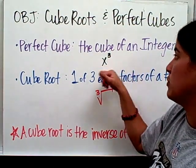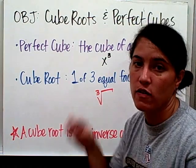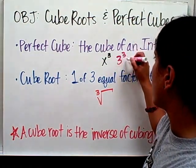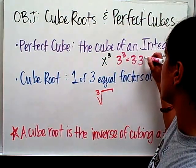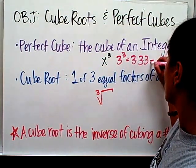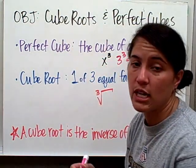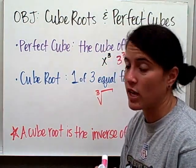So for example, x to the third power. If you're going to cube an integer, that means the third power. So 3 to the third power is 3 times 3 times 3, which is 27. So that is a perfect cube, meaning you take the cube of that integer.